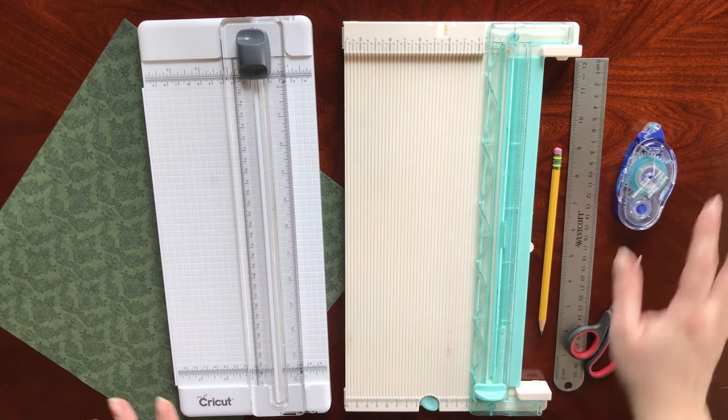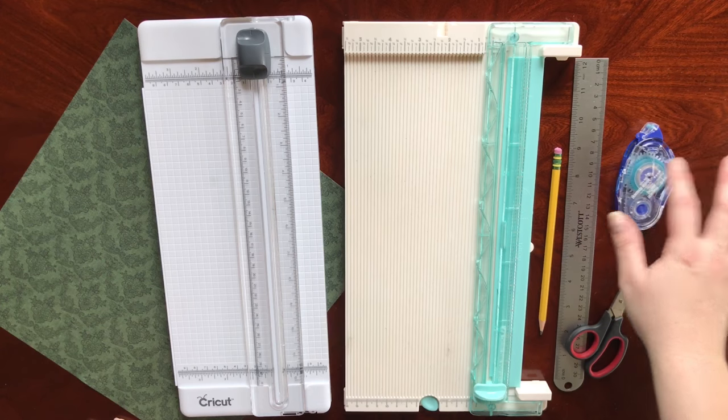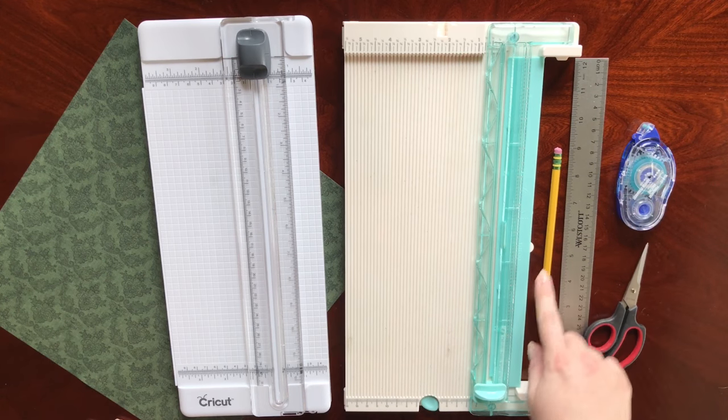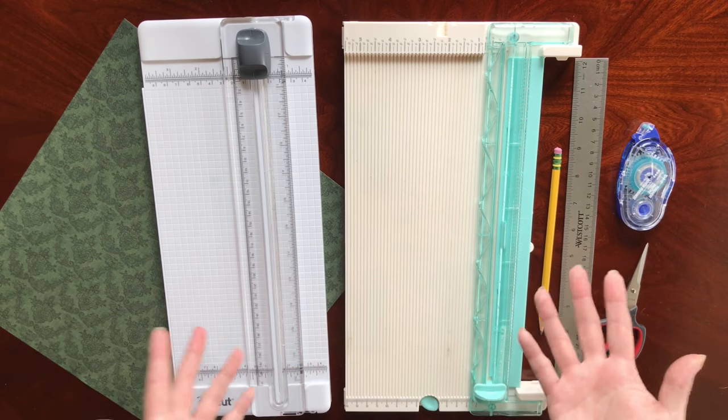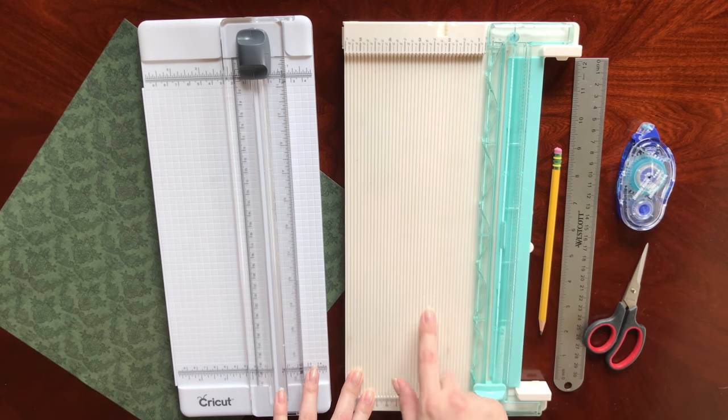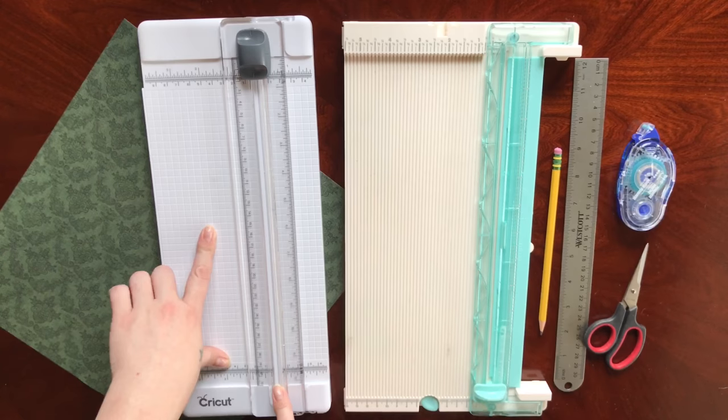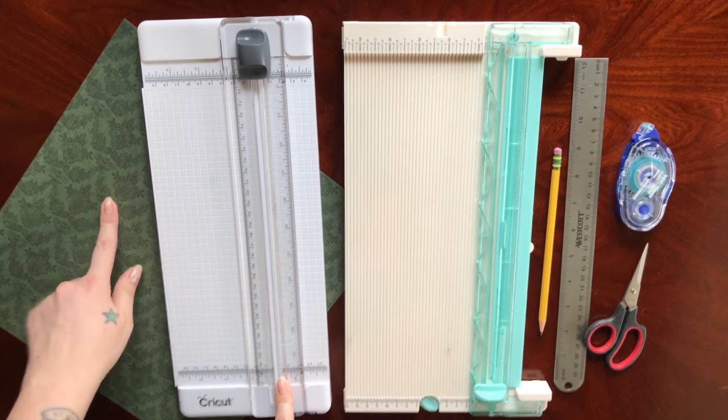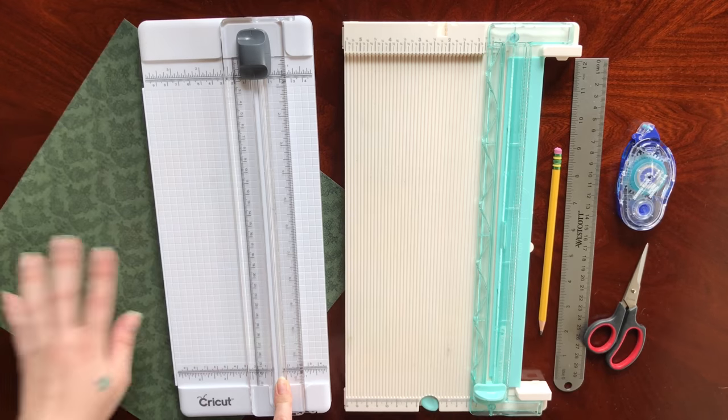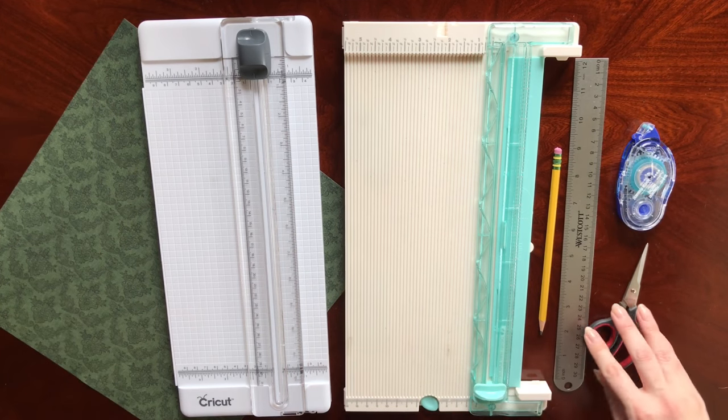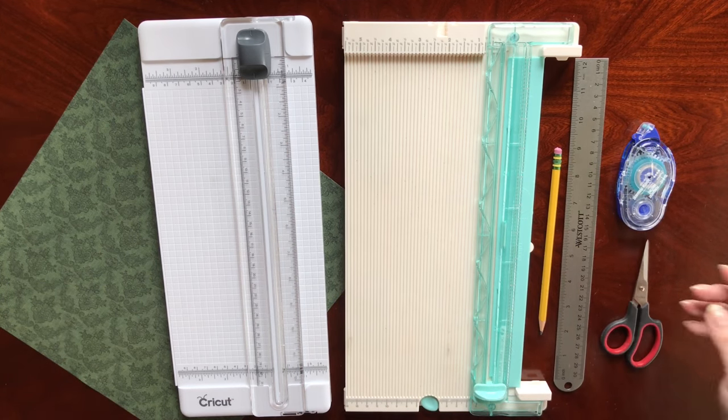These are the supplies you'll need: some type of adhesive, scissors, a ruler, a pencil, a scoring tool (or you could fold it on your own, but this makes it easier), and a paper trimmer. This will help you cut down whatever cardstock paper you have on hand that you'd like to turn into an envelope.